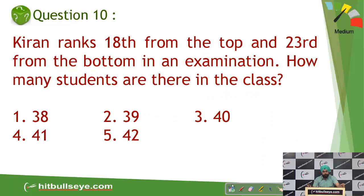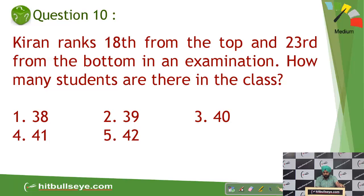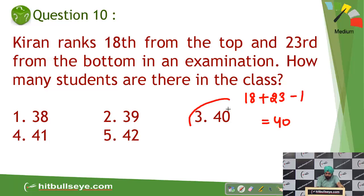The next question: Kiran is 18th from the top and 23rd from the bottom. In normal circumstances you add 18 and 23 to get 41, but that is wrong because Kiran has been counted twice. So the total number of students is 18 plus 23 minus one, which equals 40. This 40 becomes your answer. Many questions on this concept appear in reasoning sections.